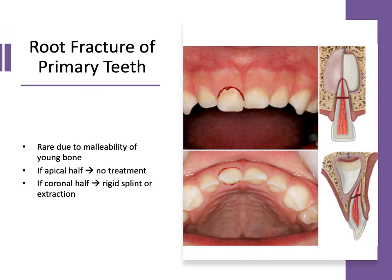Root fracture of a primary tooth is actually pretty rare due to the malleability of bone in young patients — crown fractures are more likely. If we do have a root fracture in the apical half, no treatment is recommended; we let that root tip resorb physiologically as the permanent tooth comes in. But if the fracture is in the coronal half of the root, we could consider a rigid splint to hold the coronal portion in place, or recommend extraction and space maintenance depending on where the underlying permanent tooth is.